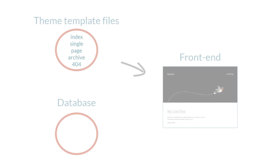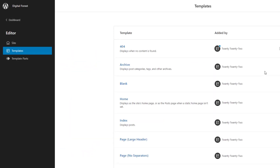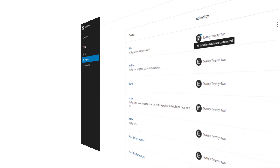Now, if you update any of the templates, it is saved in its new form into the site's database. And from that moment on, your site will apply that new template on the front end. In the list of templates in the editor, the edited ones are marked with a little blue circle.